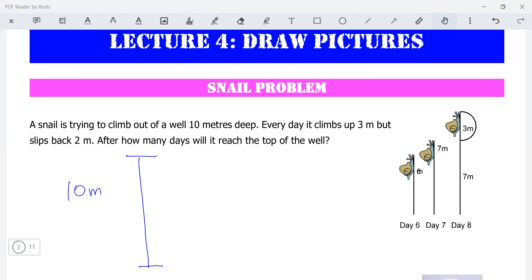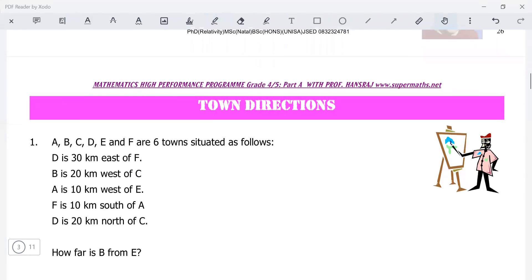Every day it climbs up three but slips back two. So it climbs three and then it falls down two. So actually it climbs only one meter every day. How many days will it take to reach the top of the well? With the help of the diagram, you should be able to find that out.